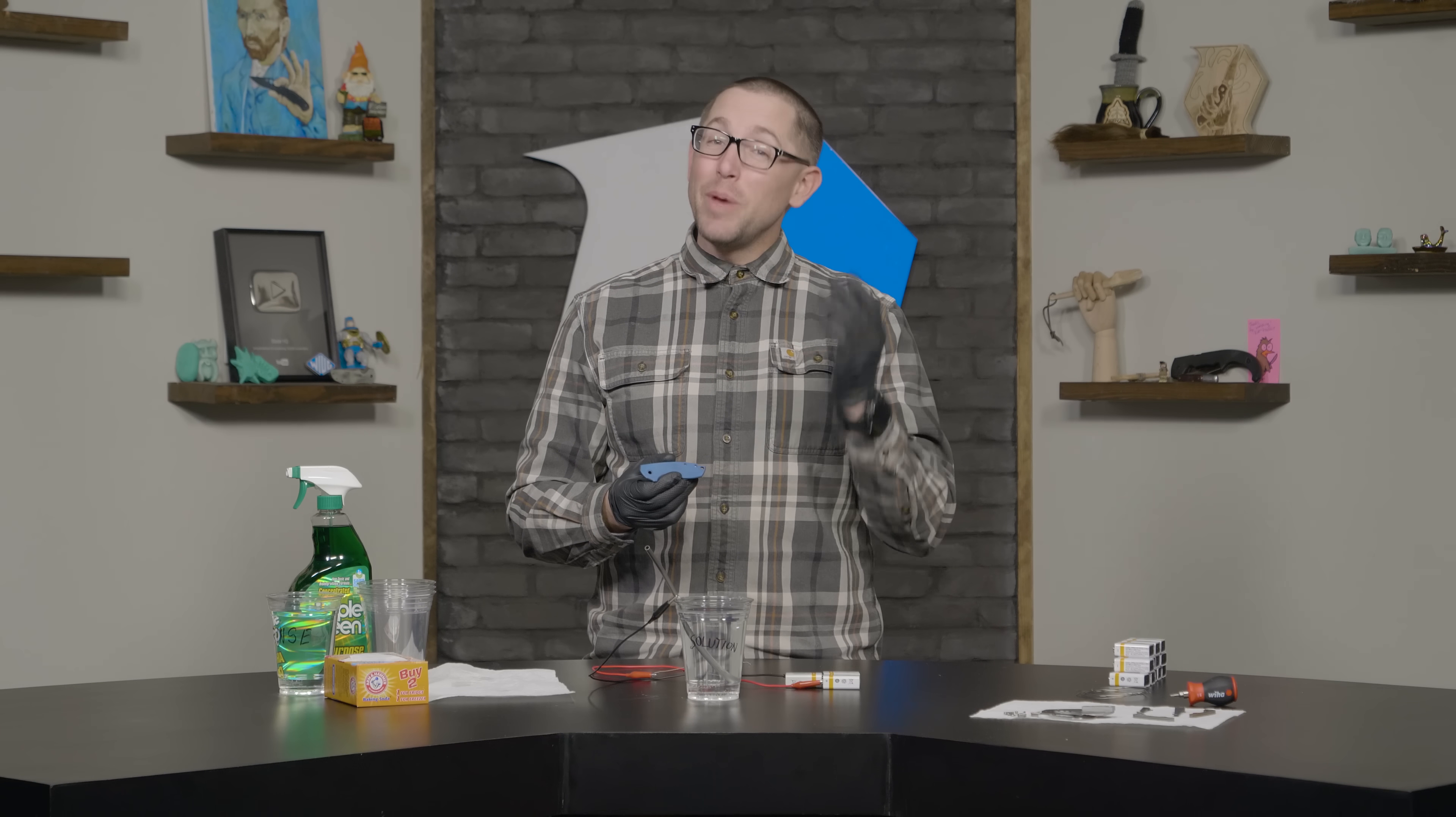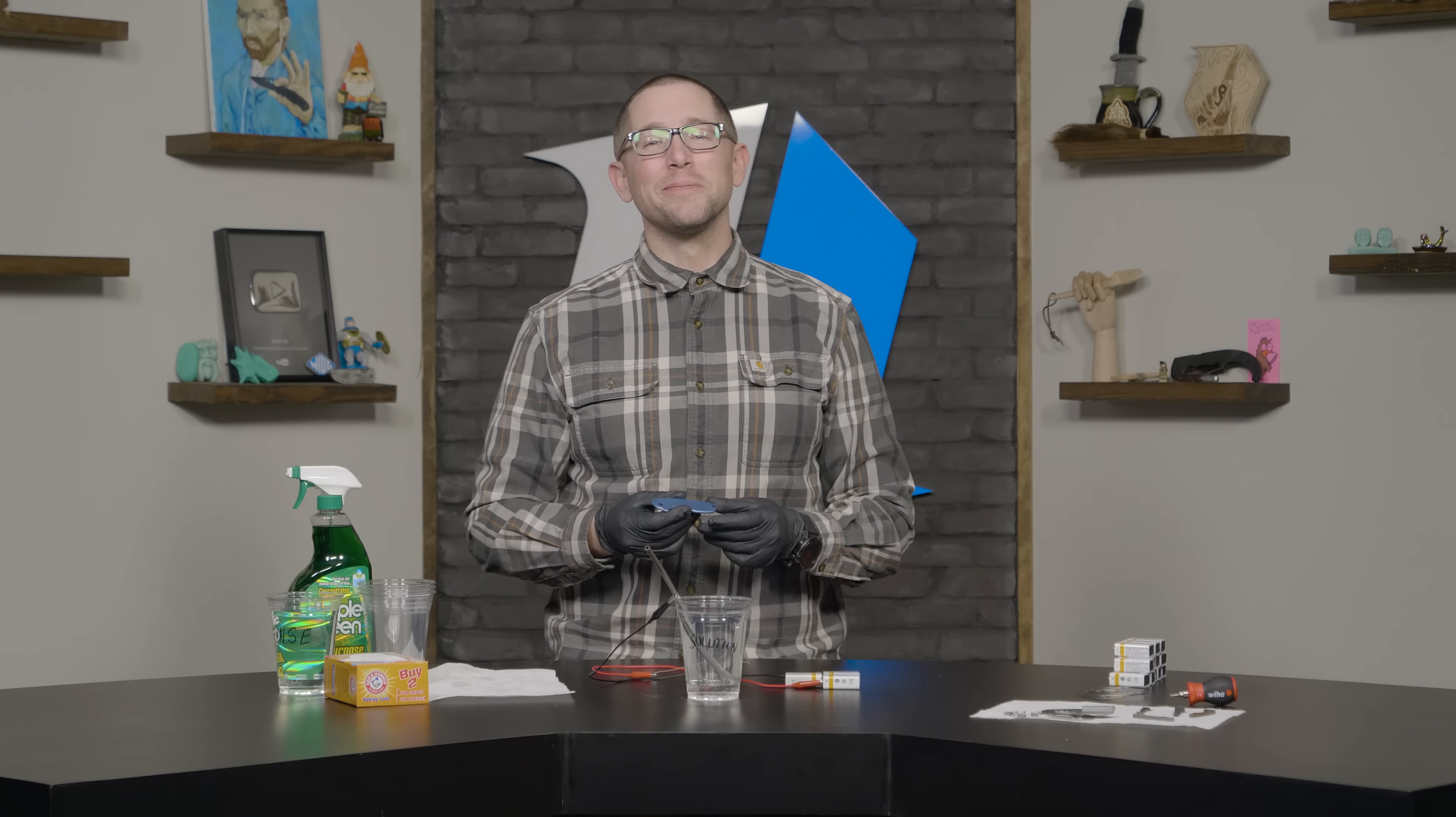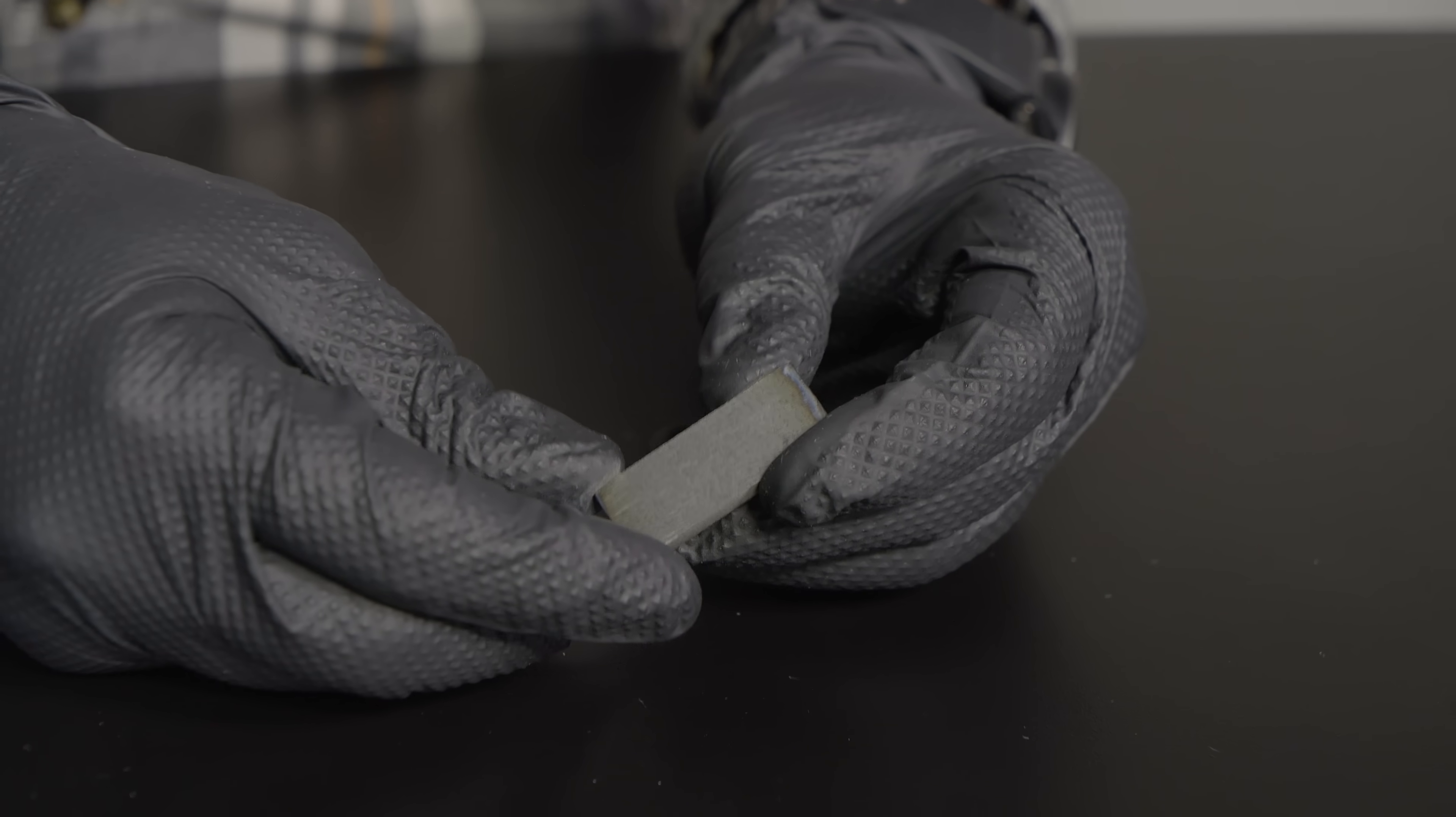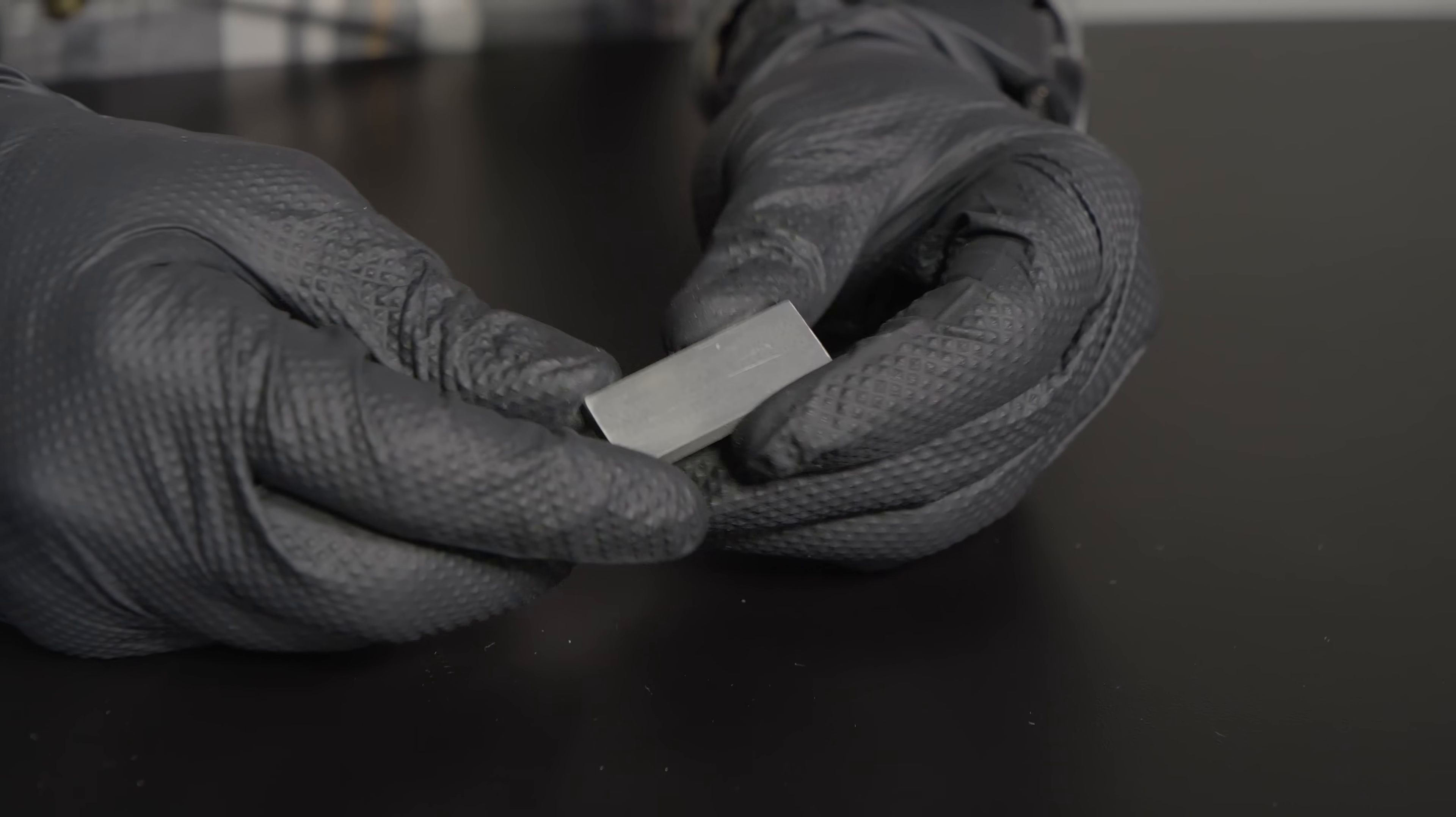Right, that turned out pretty good. Now you may be asking yourself, what about other colors? Don't worry, we've got you covered. So we have the advantage of having some extra titanium pieces laying around. So we're going to run you through all the different colors you can get using this at-home method of anodization.